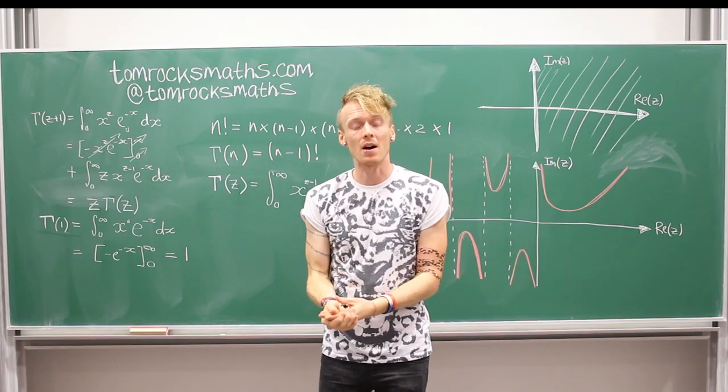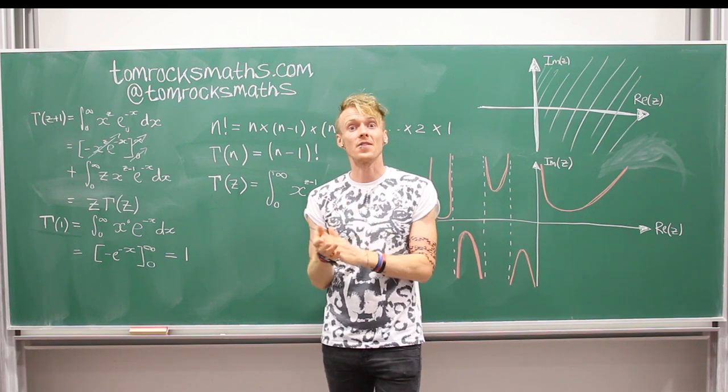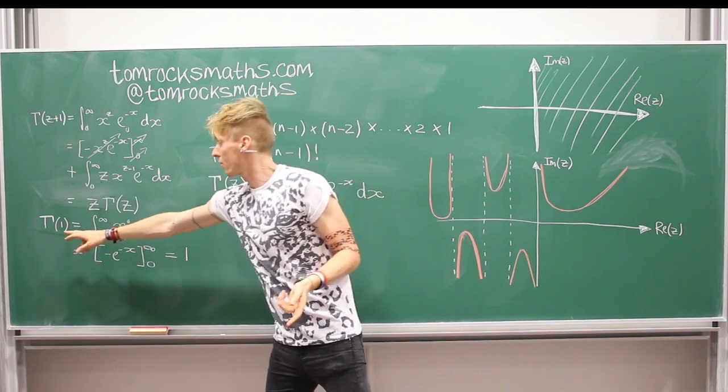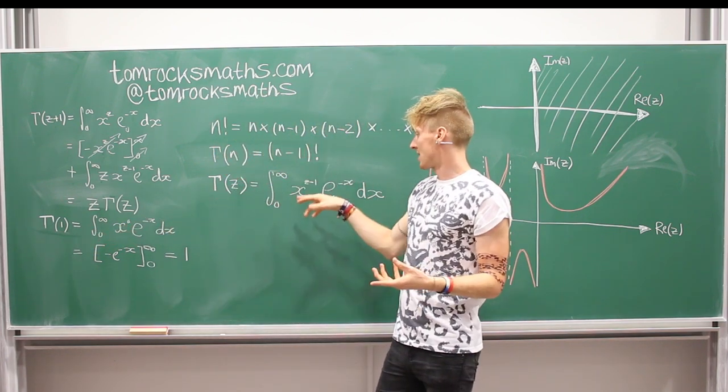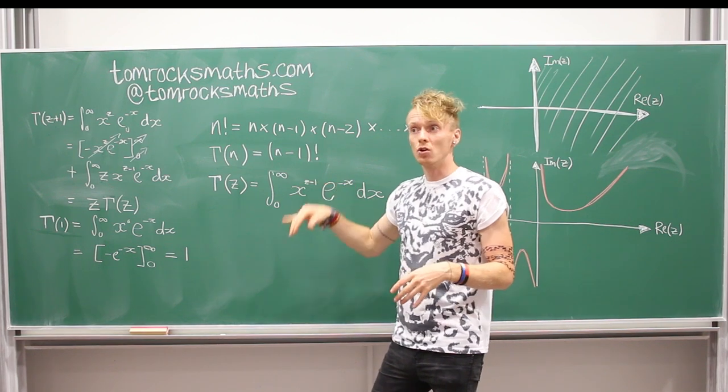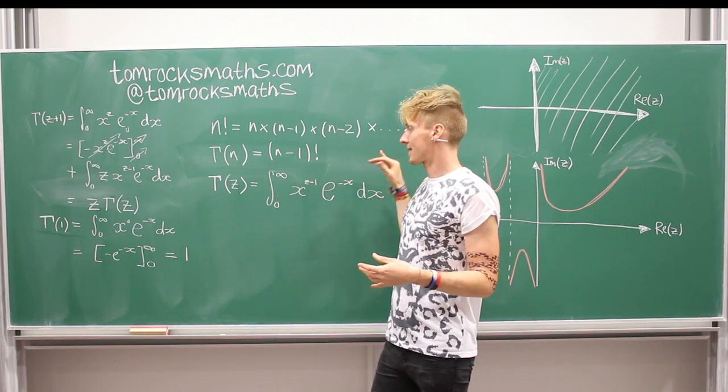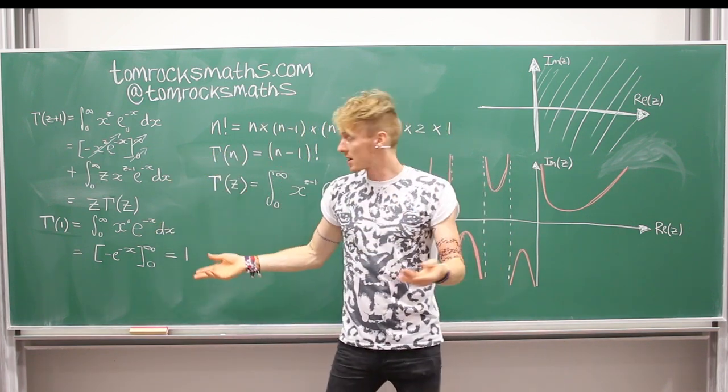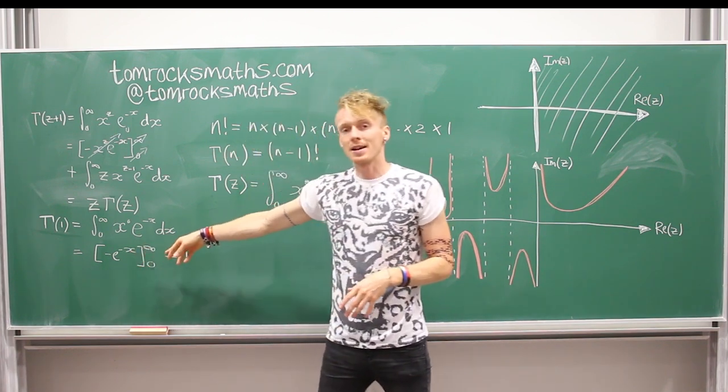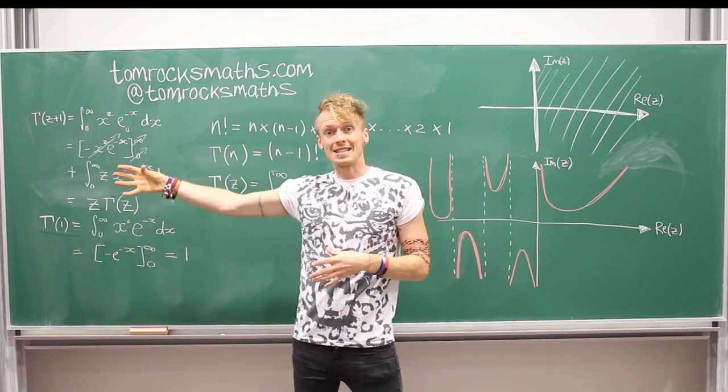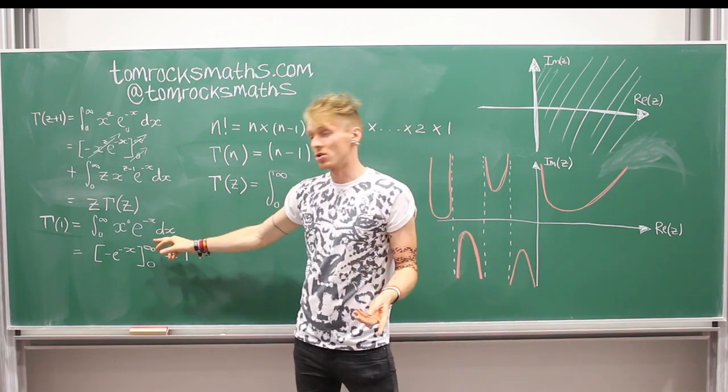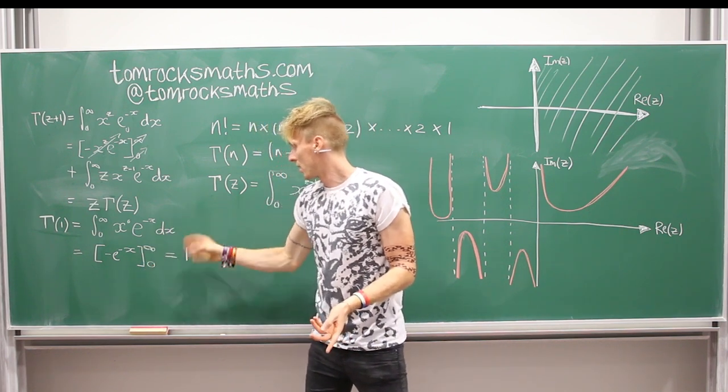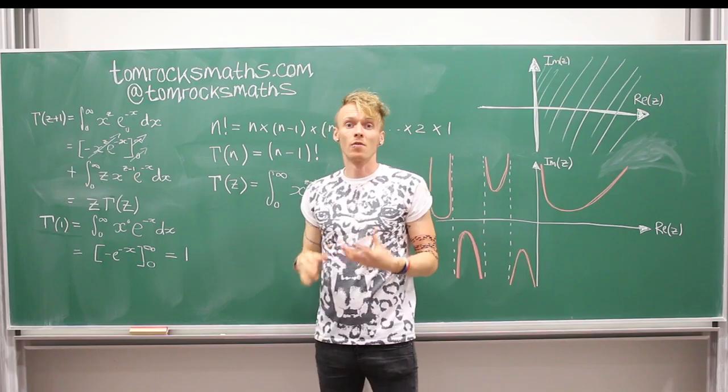And for the second part of our proof by induction, we just need to calculate the first term. And so we set z equal to 1. And so gamma of 1, using the integral definition, is just x to the 1 minus 1 is x to the 0, which is just 1, times e to the minus x, integrated with respect to x. And we can do this integral. We know the answer. So we insert the function here, minus e to the minus x, as x goes to infinity. That just tends to 0. So that gives you nothing. And then you've got a minus minus gives you a plus. e to the 0 is 1. And so we get the answer of 1.